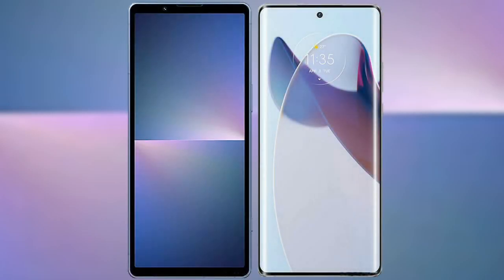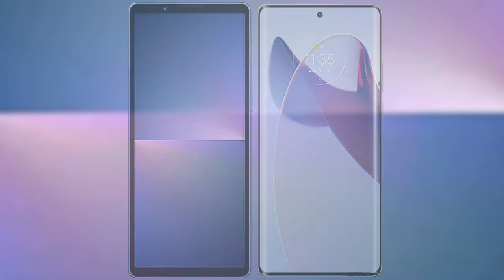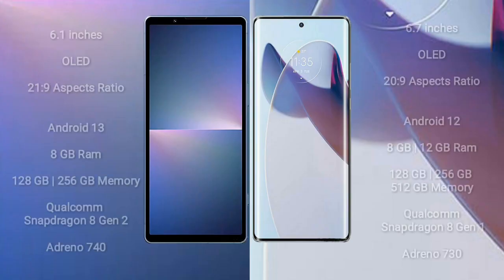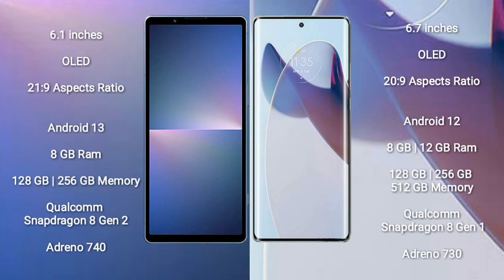I will compare the new Sony Xperia 5 Mark V with the Motorola Moto X30 Pro. The Sony Xperia 5 Mark V comes with a 6.1-inch OLED display and an aspect ratio of 21:9. The Motorola Moto X30 Pro comes with a 6.7-inch OLED display and an aspect ratio of 22:9.